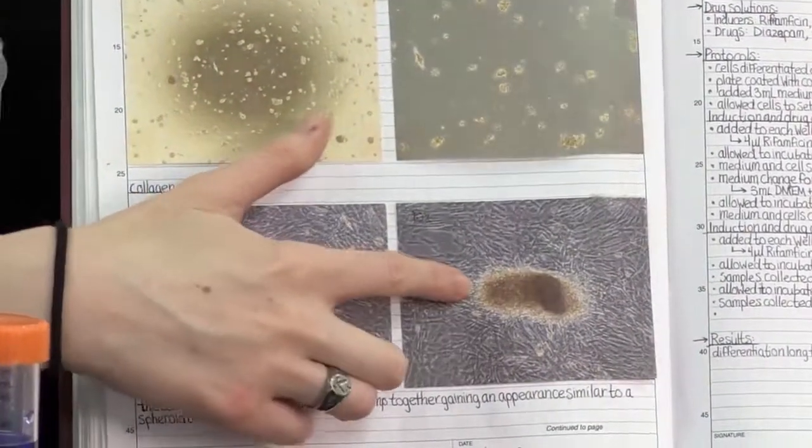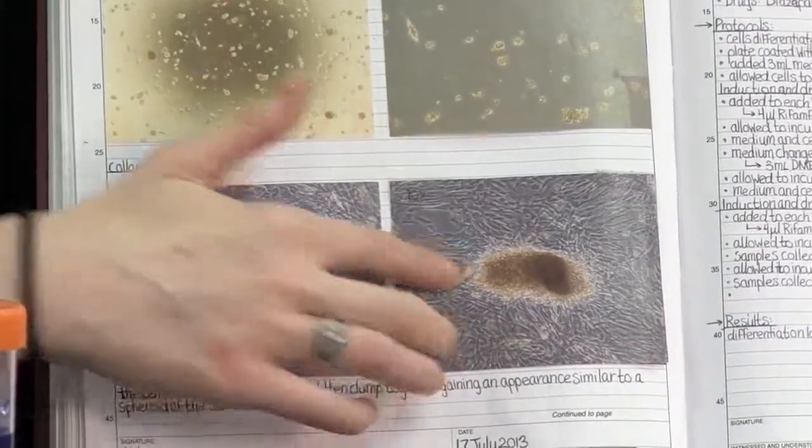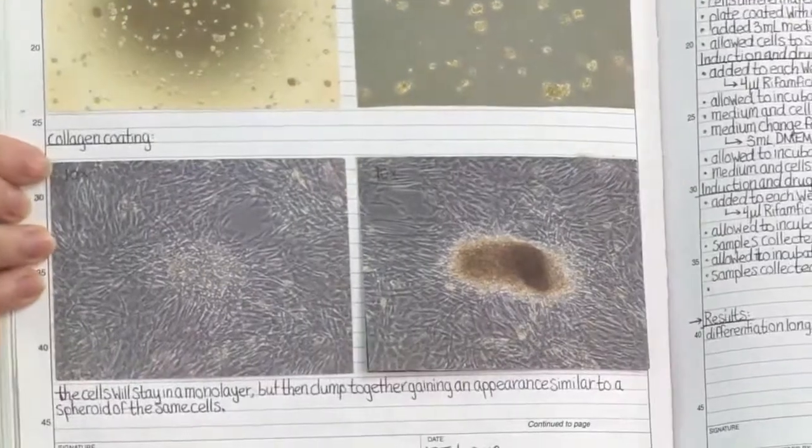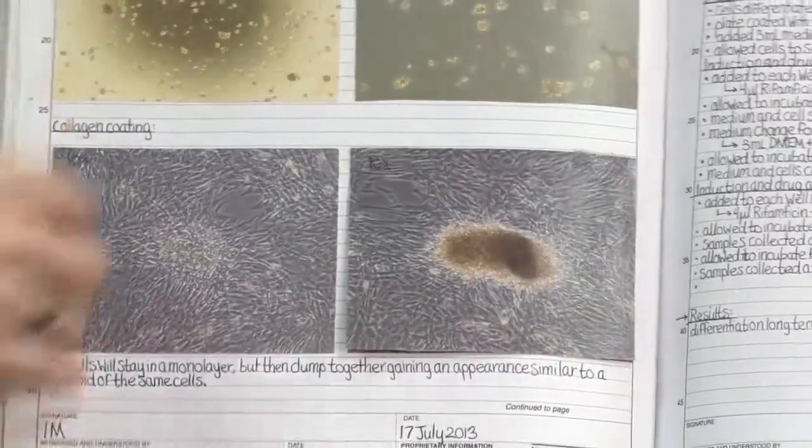And seven days later, they formed this giant structure, this blob shape. So that was really helpful for me to look back and say, oh yeah, these cells have definitely changed over time.